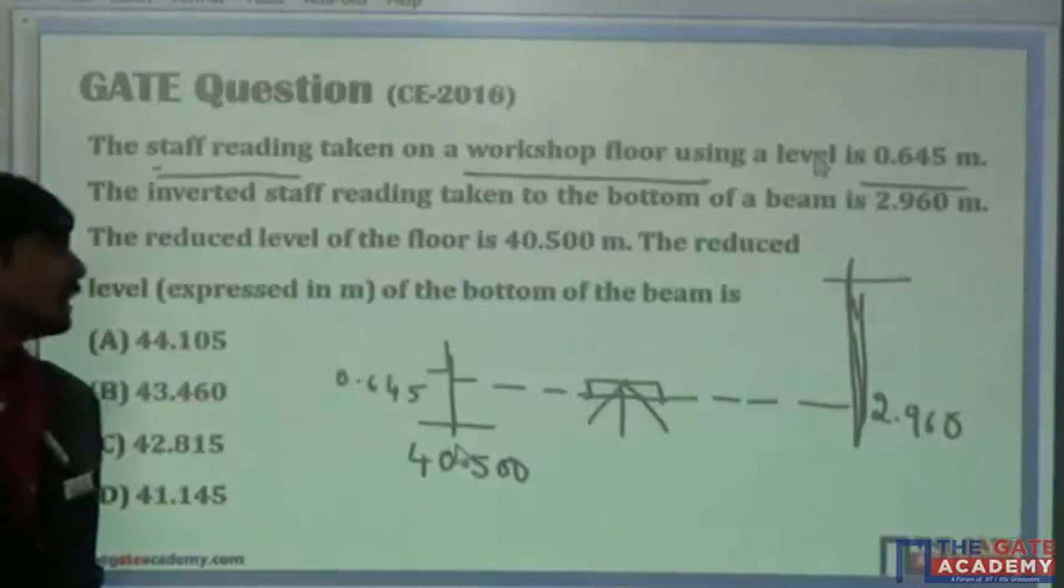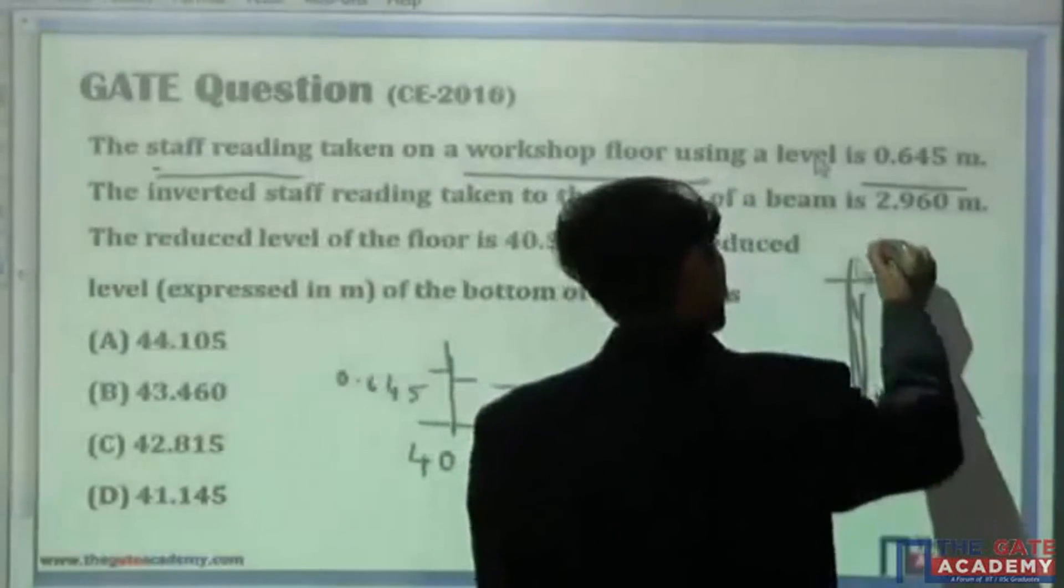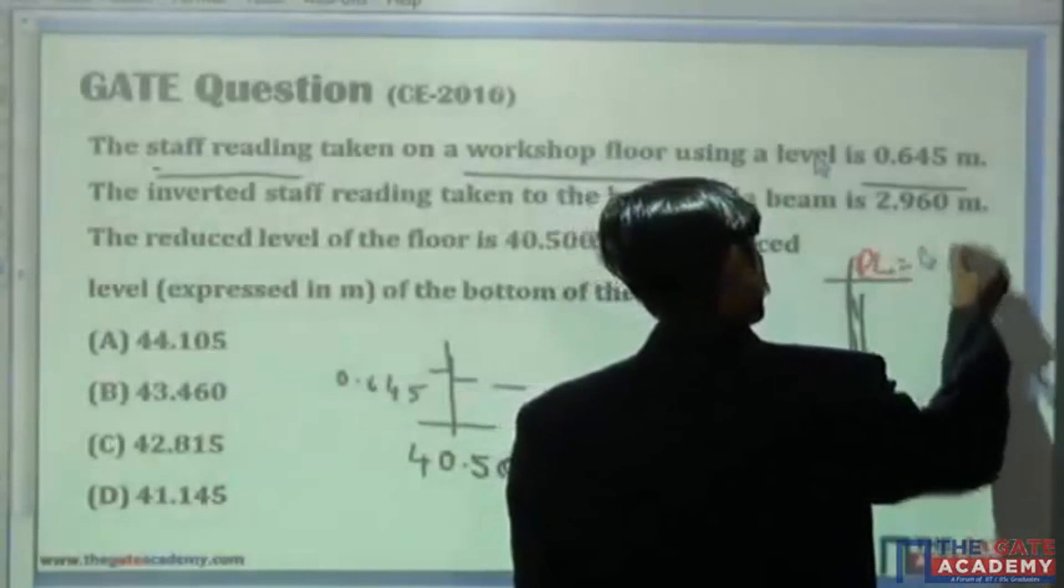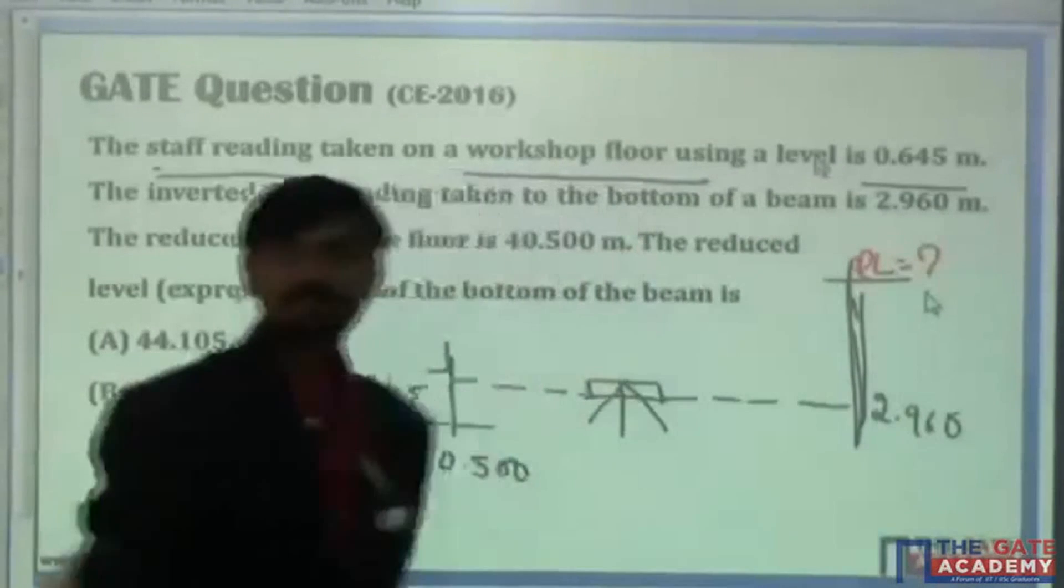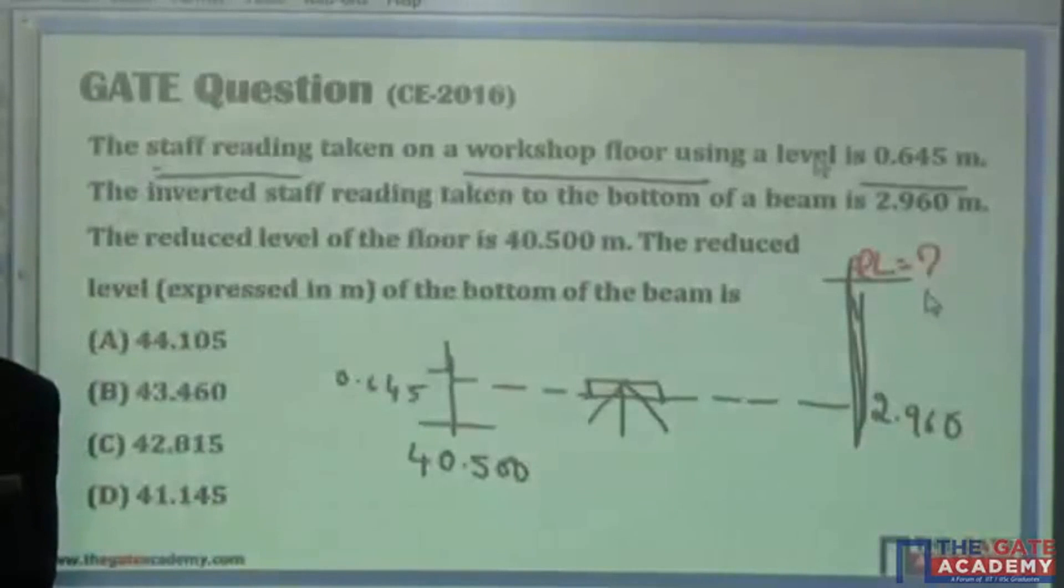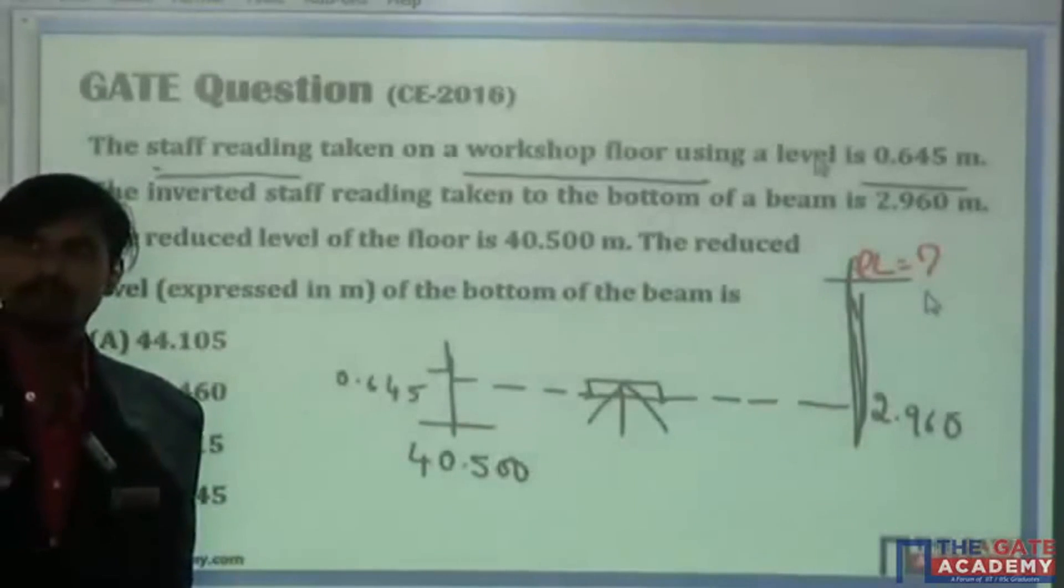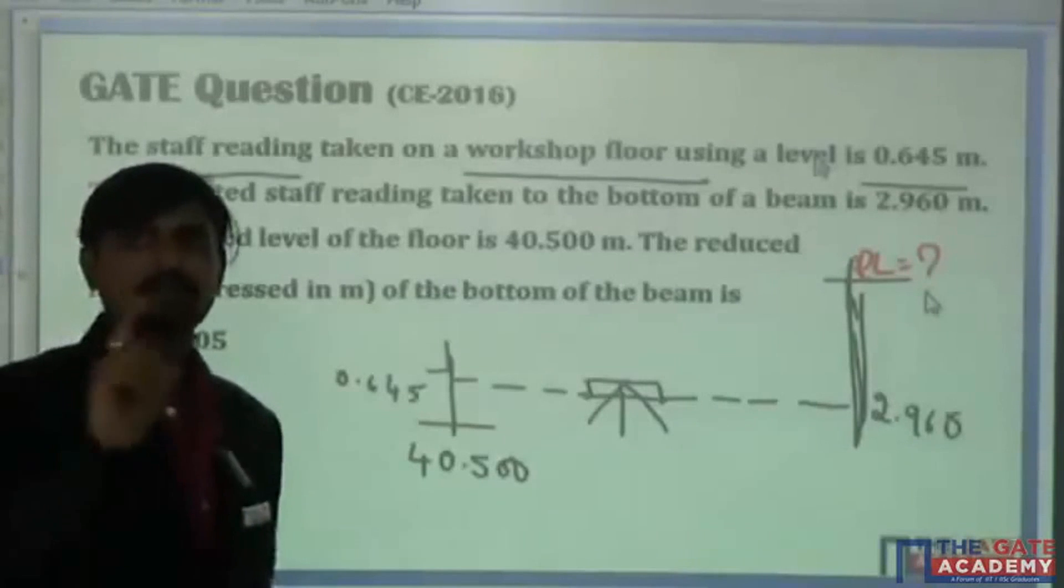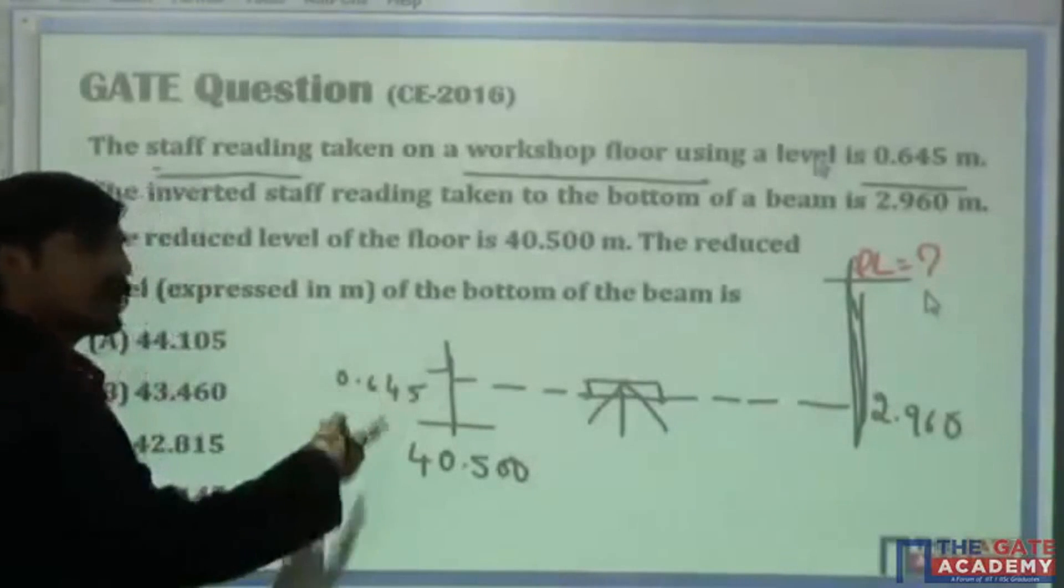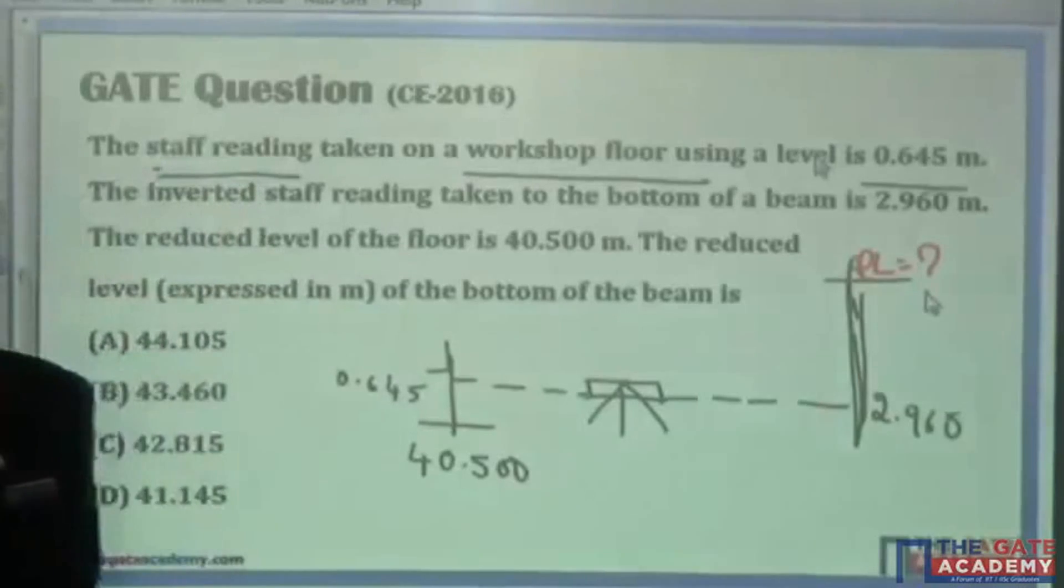The reduced level expressed in meter to the bottom of the beam. You are supposed to find out RL at the bottom of the beam. What is RL here? You know why I have drawn diagram is that you can solve the same problem with the help of formula also.